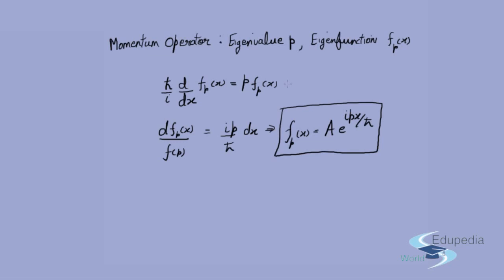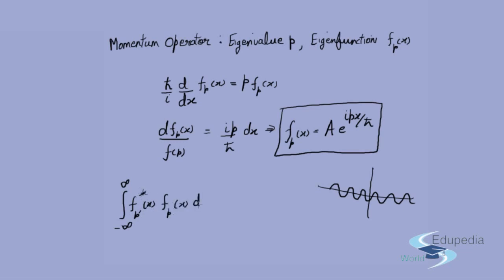As with the position operator, this eigenfunction is not square-integrable — it represents an infinite wave of a particular wave number extending over all space. Nevertheless, it admits Dirac orthonormality. The inner product ⟨f_{p'} | f_p⟩ = ∫_{−∞}^{∞} f_{p'}*(x) · f_p(x) dx = |a|² ∫_{−∞}^{∞} e^{i(p−p')x/ℏ} dx.